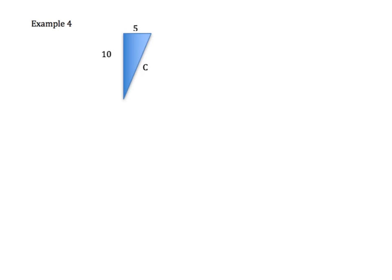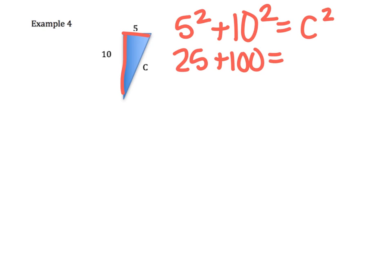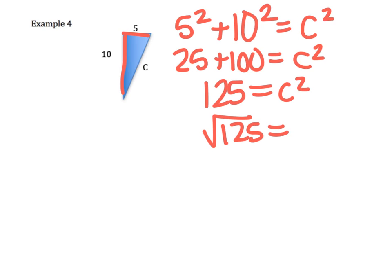Try this one on your own, and then come back to see how you did. In our final example, we have a triangle with legs 5 and 10. So I do 5 squared plus 10 squared equals C squared, and I have 25 plus 100 equals C squared. 125 is equal to C squared, and now I have to do the square root of 125 to get C.